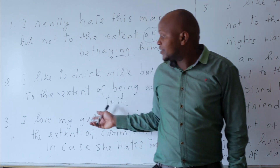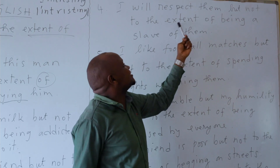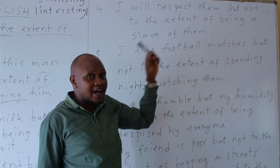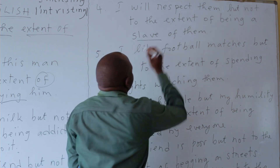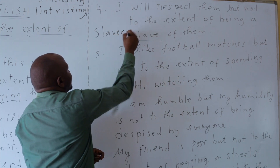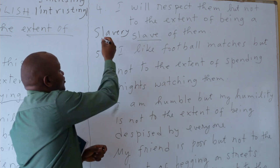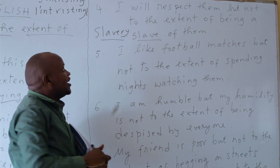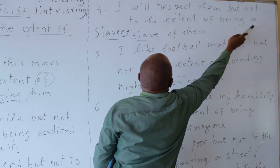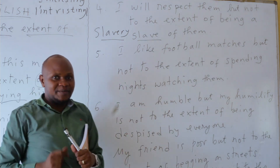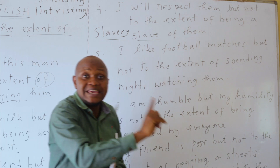Number four: I will respect them, but not to the extent of being a slave of them. A slave — slavery. I will respect them, but not to the extent of being a slave of them.